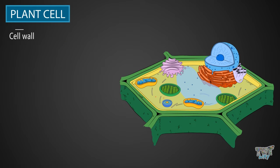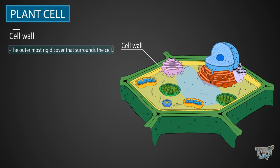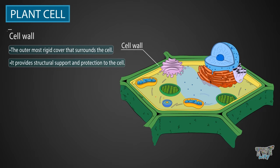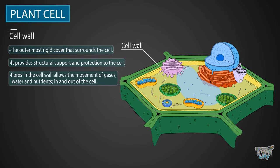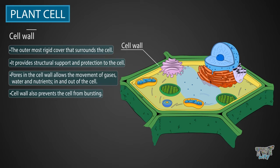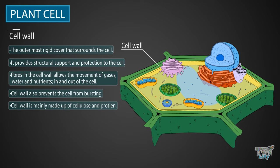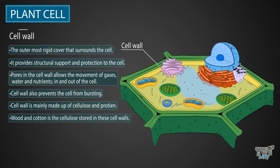Cell wall. It is the outermost rigid cover that covers the cell. It provides structural support and protection to the cell. Pores in the cell wall allow the movement of gases, water, and nutrients in and out of the cell. The cell wall also prevents the cell from bursting when a lot of water enters the cell. This cell wall is mainly made up of cellulose and protein. All the wood and cotton that we use is the cellulose stored in these cell walls.